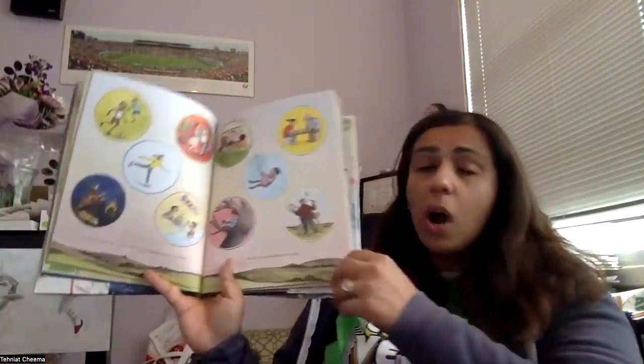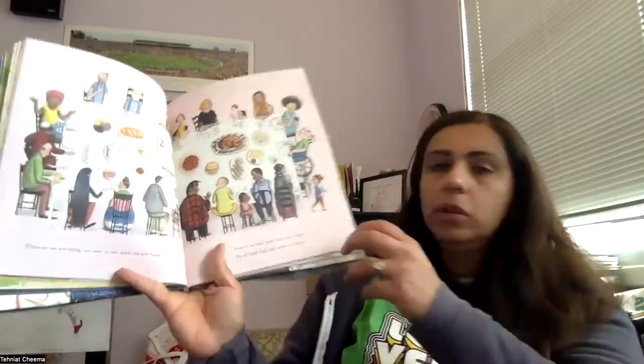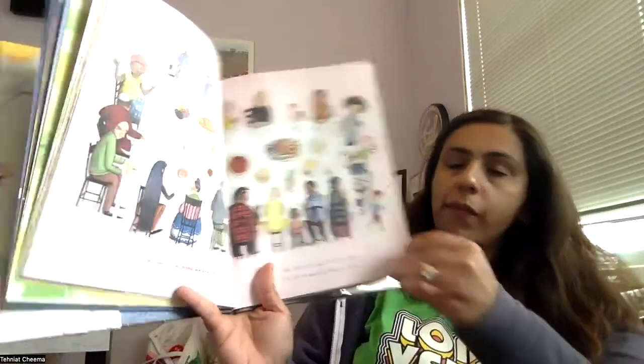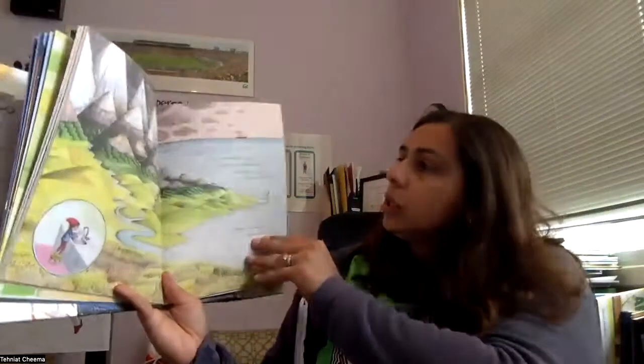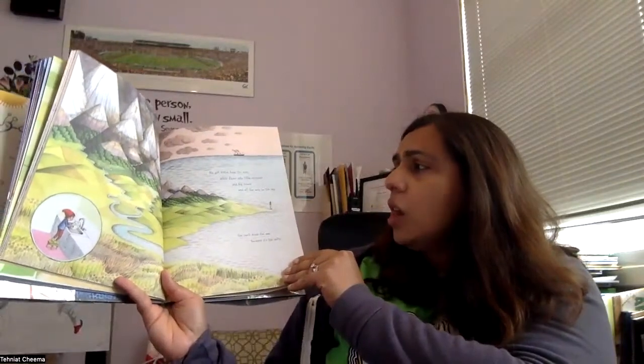When people are not at work or at school or sick or asleep, we get to do whatever we want, like on the weekend. Whatever we're doing, we need to eat when we're hungry. Some of us have more food than others. We all need food and water to survive. We get water from the rain which flows into little streams and big rivers and all the way to the sea. You can't drink the sea because it's too salty.